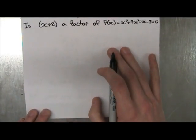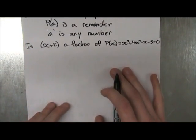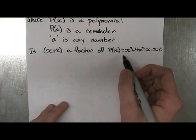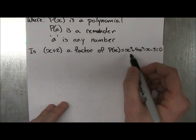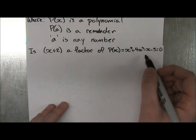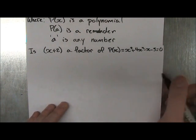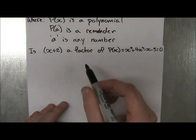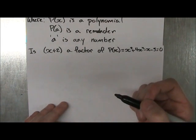It states, is x plus 2 a factor of P(x), when P(x) is x cubed plus 4x squared minus x minus 3 equal to 0? Okay, so we're gonna see if it's a factor using the same technique we just did.